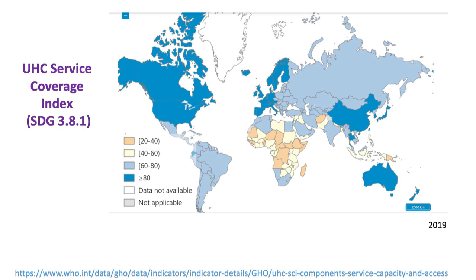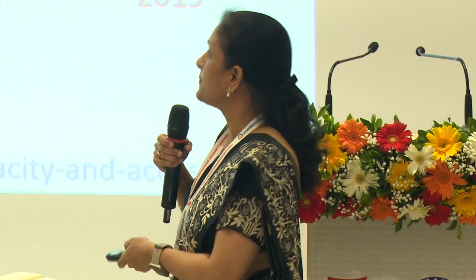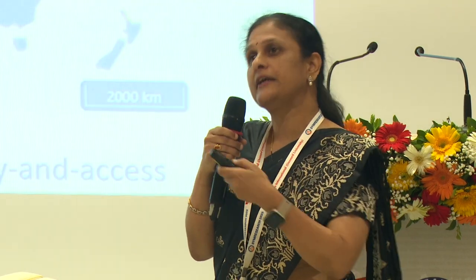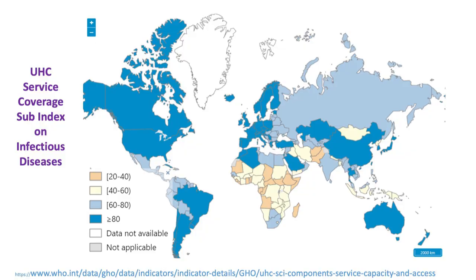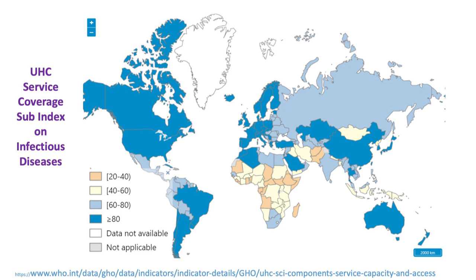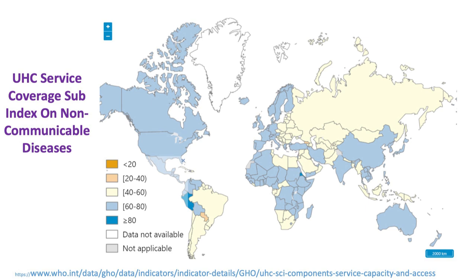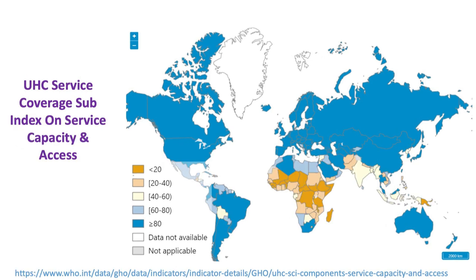According to a WHO report, in terms of the coverage index, India is somewhere around the 60th to 80th rank among all countries, which is pretty good compared to most other regions, but there is still a long way to go. For specific indicators on infectious disease, non-communicable disease, and maternal and child health, India is faring almost similar on the global map.